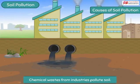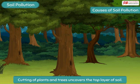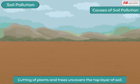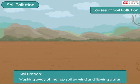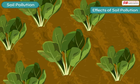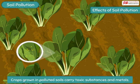Chemical wastes from industries also mix with the soil and pollute it. When the trees and plants growing on land are cut to obtain land for construction of roads and buildings, the top layer of the soil is uncovered. The barren land is exposed to wind and flowing water, which wash away the soil, causing soil erosion.